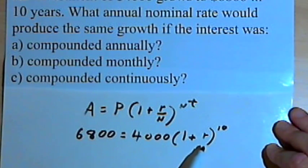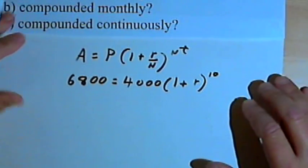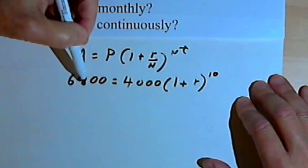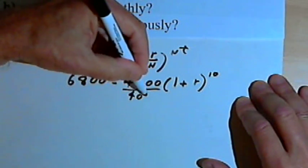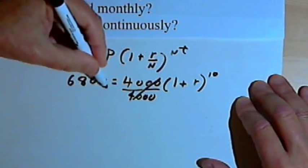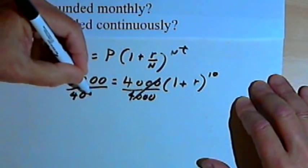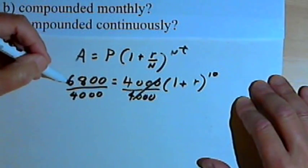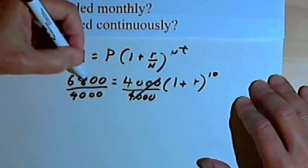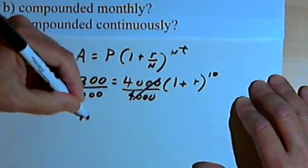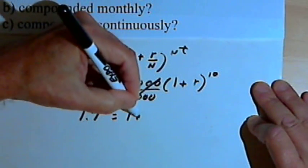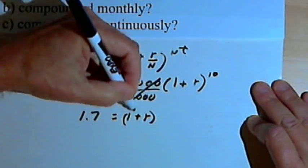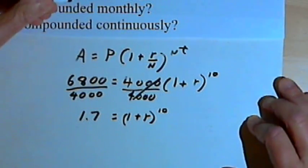Now what we have to do is solve for r. The first thing I'll do is divide both sides of the equation by 4000. So I've got 6,800 divided by 4000. When I do that division, I end up with 1.7, and that 1.7 equals 1 plus r raised to the 10th power.